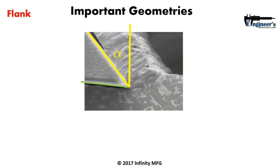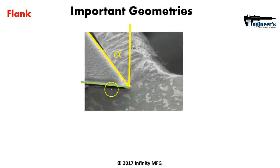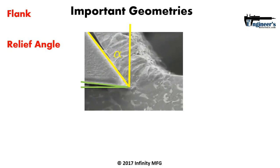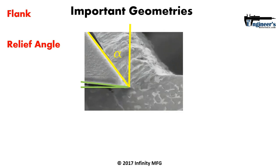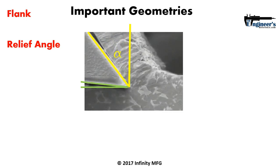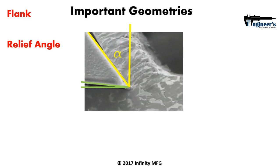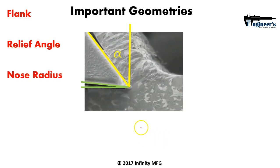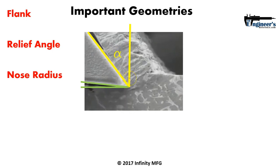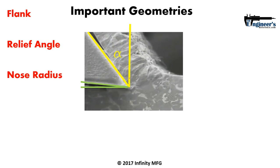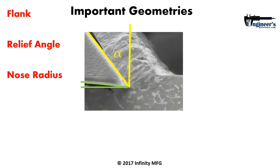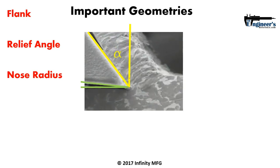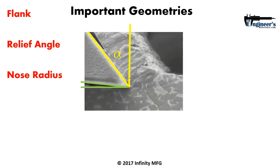Another feature is the flank — the back side of your tool. The flank combined with the new work surface below it creates what's known as the relief angle. This angle prevents the tool from rubbing the workpiece, ensuring a good surface finish and preventing premature tool wear from increased cutting forces and heat. There's also the nose radius at the very end of the tool. A larger radius means a stronger tool but higher cutting forces; a smaller radius gives a sharper but weaker tool that's more prone to fracture — another decision driven by material properties.